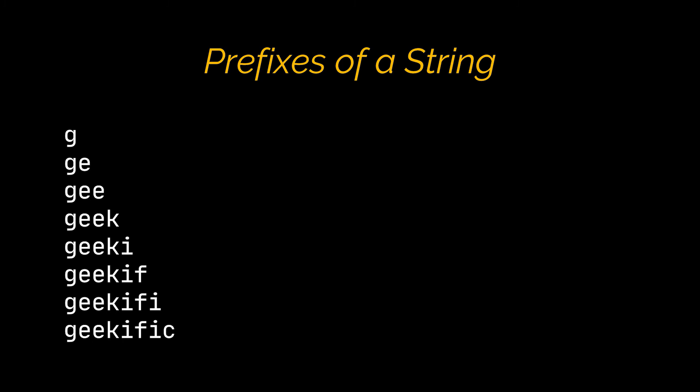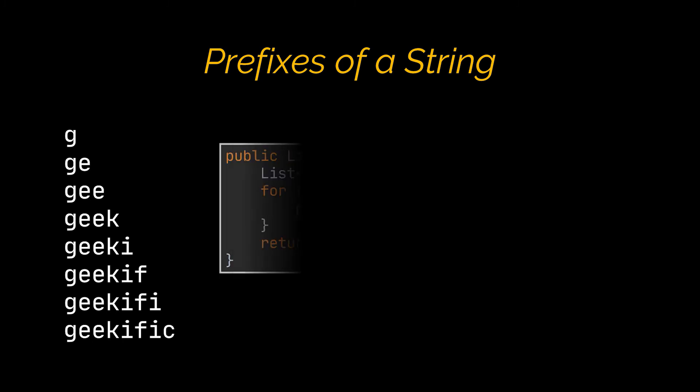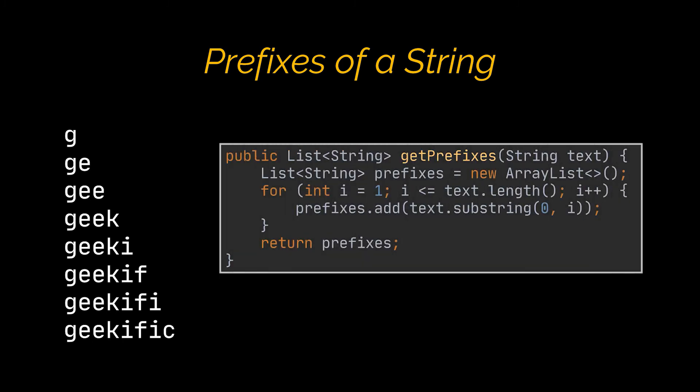The upcoming operation is very similar to suffixes — retrieving the prefixes of a given string. The code snippets are also very similar; the difference is that instead of setting the fixed boundary of extracted substrings to the end of the array, we set it to the beginning.